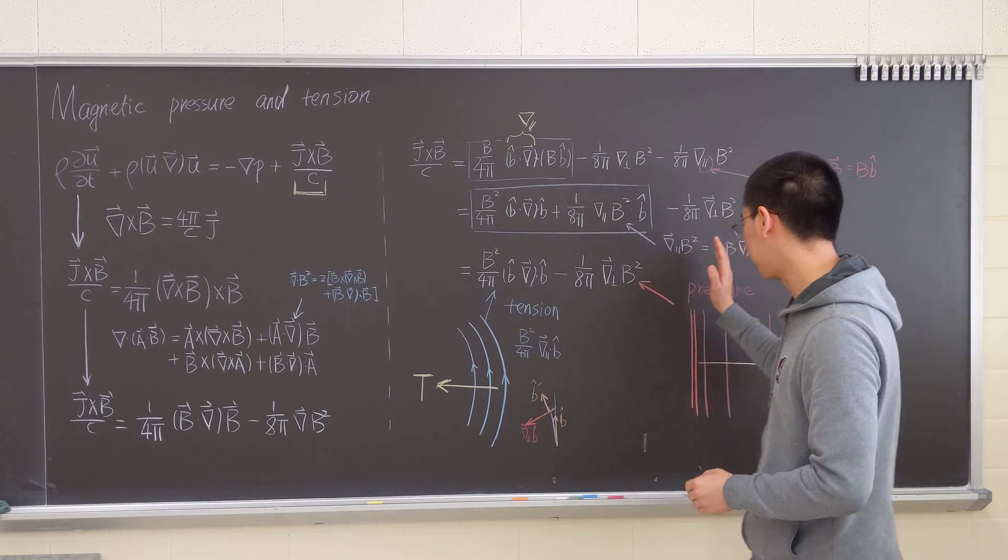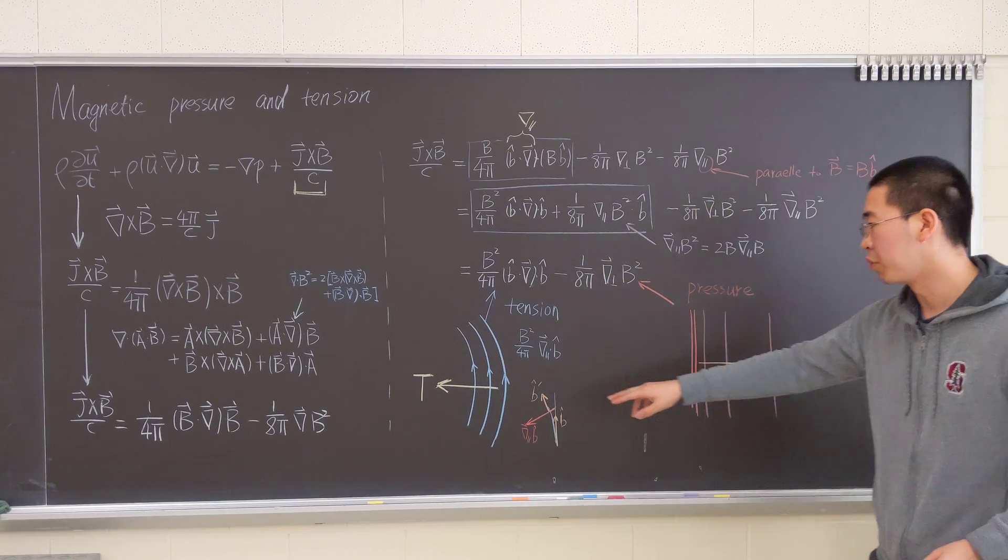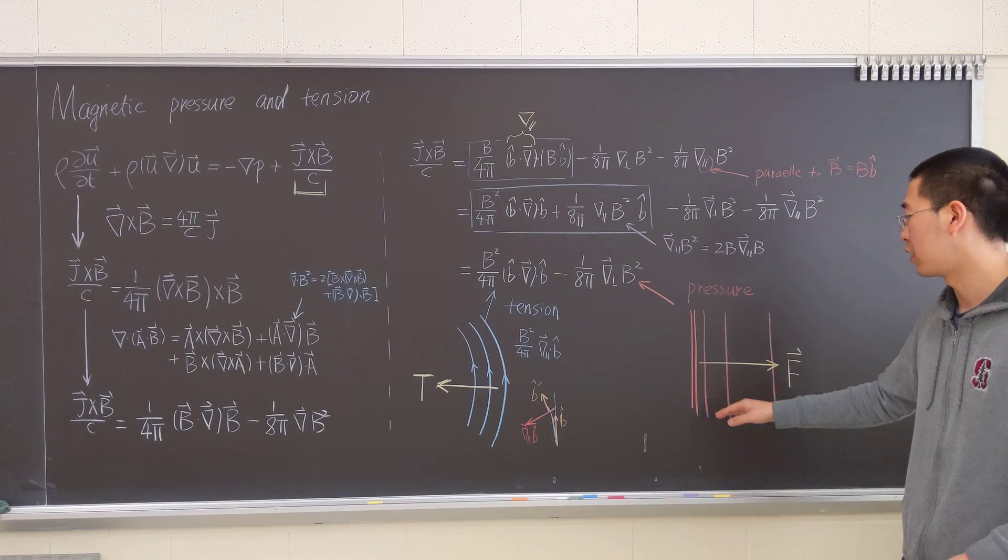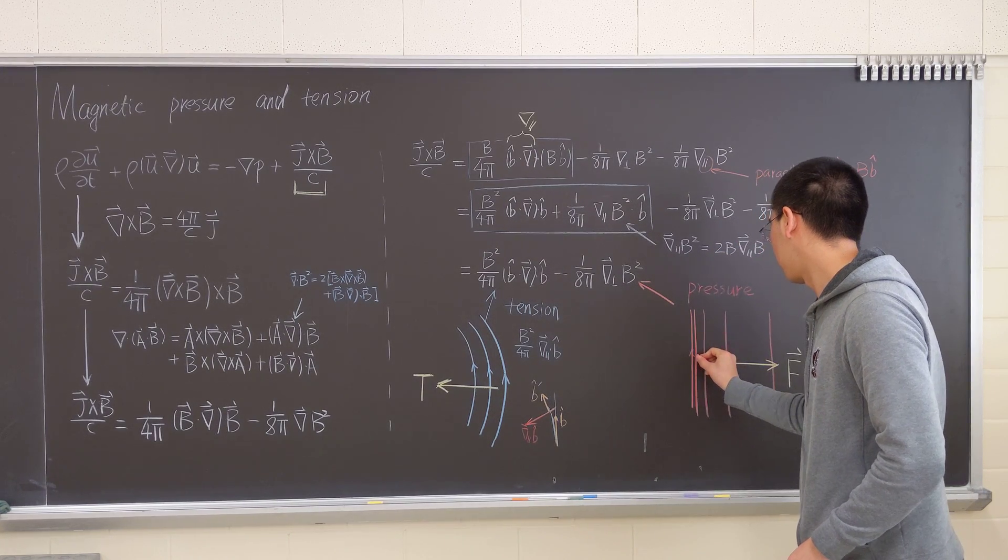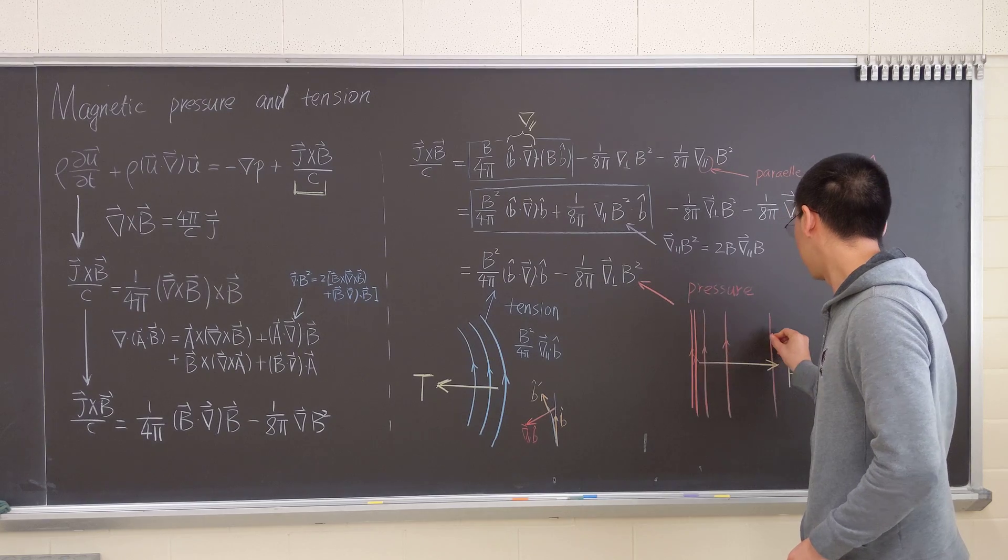Tension can be compared to this, pressure can be compared to that. So that blue line is the magnetic field line, and this is the magnetic field line as well. Just illustrate the point.